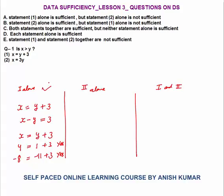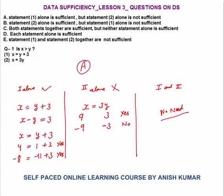So we get a unique answer 'yes', meaning Statement 1 is sufficient. Statement 2 says x equals 3y. If y is 3, x is 9, so x > y — yes. But if y is minus 3, x is minus 9, and minus 9 is not greater than minus 3 — no. Both yes and no are valid, so Statement 2 is not sufficient. No need to combine. Answer is choice A: Statement 1 alone is sufficient but Statement 2 alone is not.